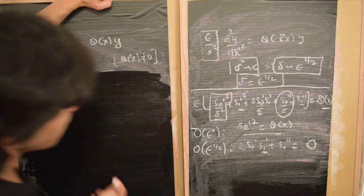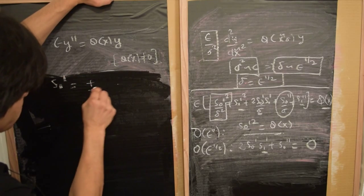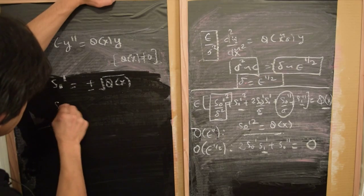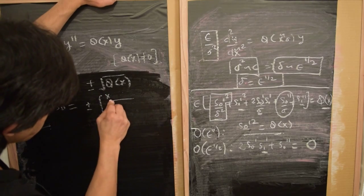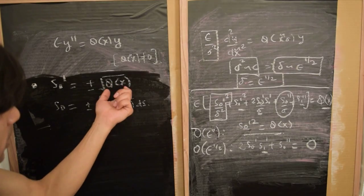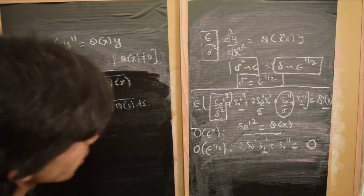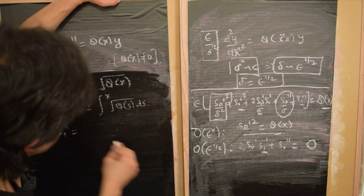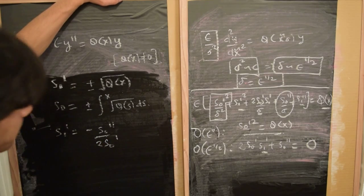From S₀′² = q(x), we get S₀′ equals plus or minus square root of q(x), and we can integrate to write S₀ as plus or minus the integral over x of the square root of q(s) ds. So for any arbitrary non-zero function q(x), S₀ is given as the integral of the square root of q. We can then use that to determine S₁. From 2S₀′S₁′ + S₀″ = 0, we get S₁′ equals minus S₀″ divided by 2S₀′.